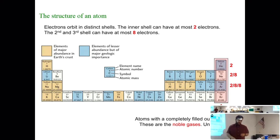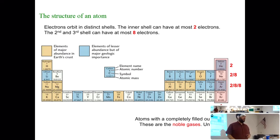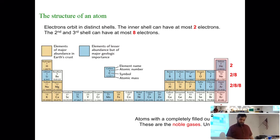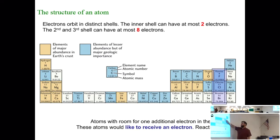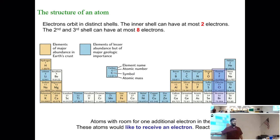The noble gases are all chemically inert — their outer shell is full, so they don't react. How many electrons does chlorine need to become stable? One. Oxygen needs two. The halogens — fluorine, chlorine, bromine — they all behave the same: very reactive, all desperate to receive one electron.